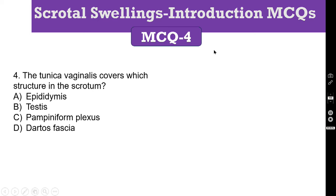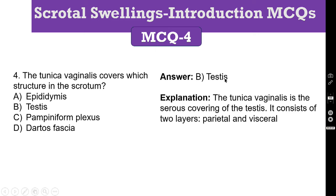MCQ number 4: The Tunica vaginalis covers which structure in the scrotum? Options are A. Epididymis, B. Testis, C. Pampiniform Plexus, D. Dartos fascia. The correct answer is B, Testis. The Tunica vaginalis is the serous covering of the Testis. It consists of two layers — Parietal and Visceral. Hydrocele is a collection of fluid between the Parietal and Visceral layers of the Tunica vaginalis.